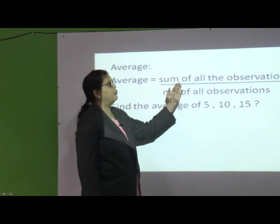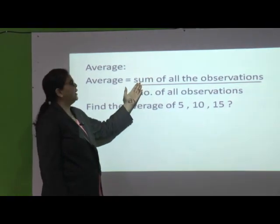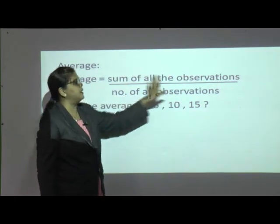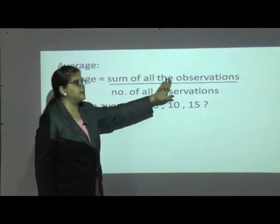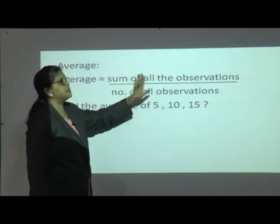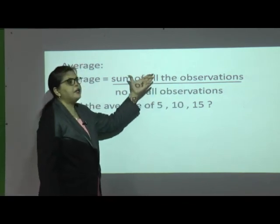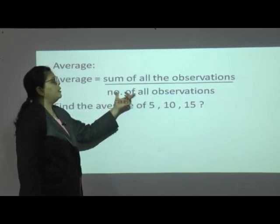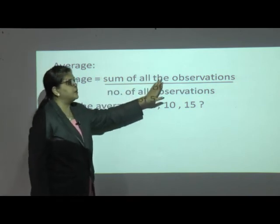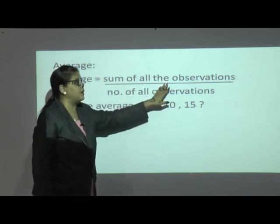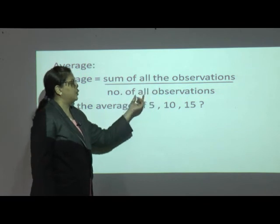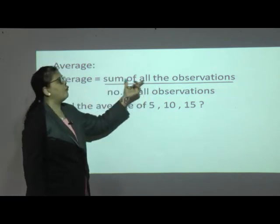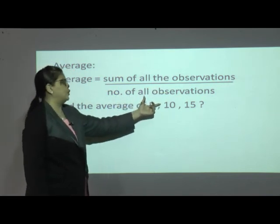Average is equal to sum of observations — what is the meaning of sum here? We have to do all the addition. Whatever the observations are, it may be the number of marks, it may be the number of runs, it may be the distance travelled by a train. You have to do the addition, and number of observations means how many subjects' marks, or how many students' marks, or how many class marks — that number you have to write. So average is equal to sum of all the observations upon the number of all the observations.